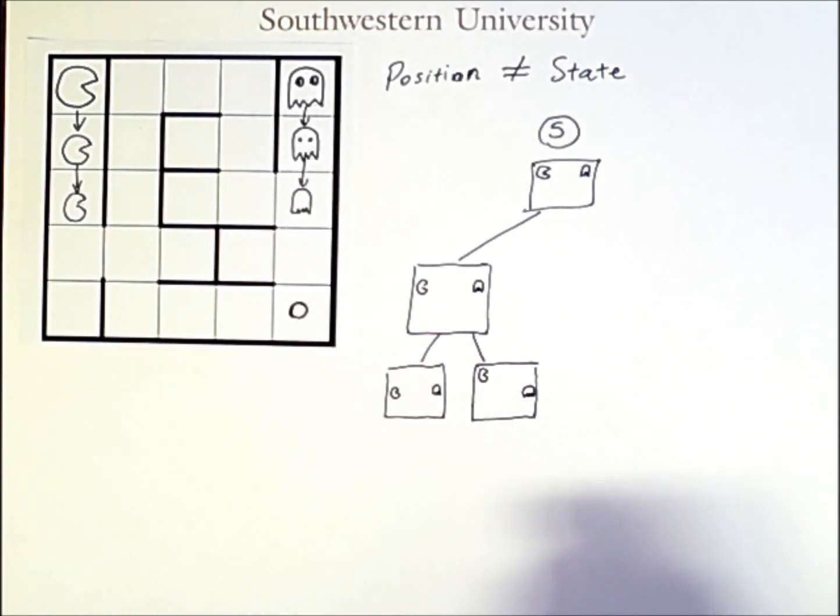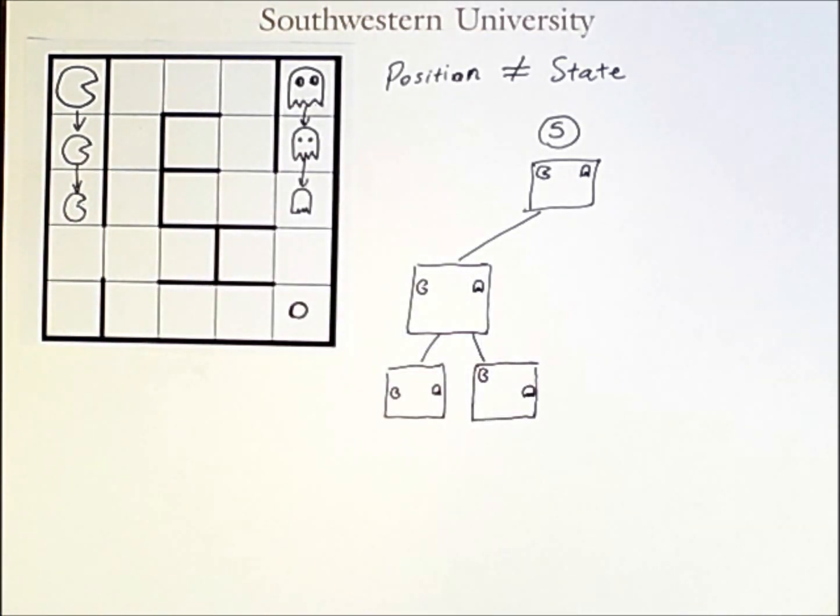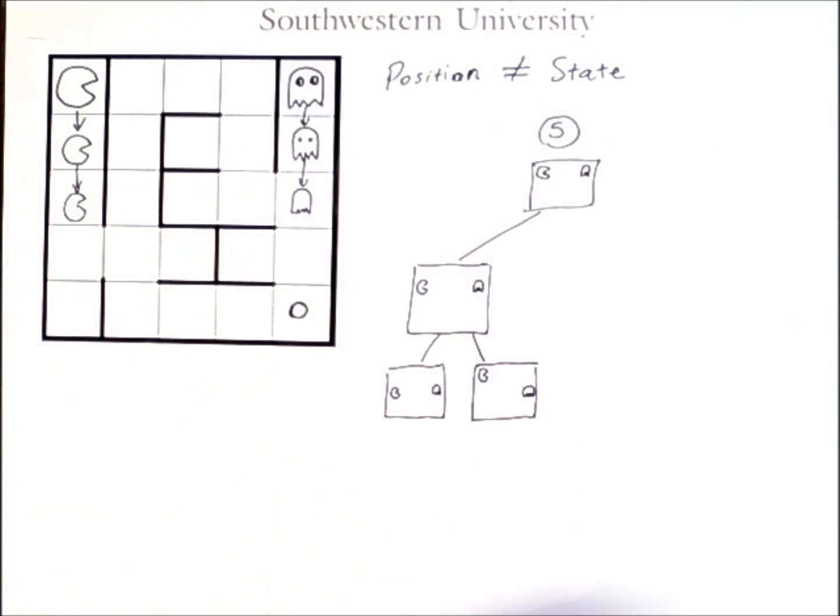So, because we have two agents moving around, the state space has expanded. Now, once again, the maze is not changing, so it is possible to abstractly represent the state using only the positions of these agents.